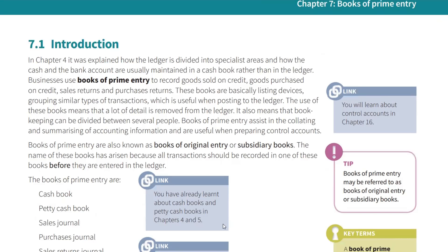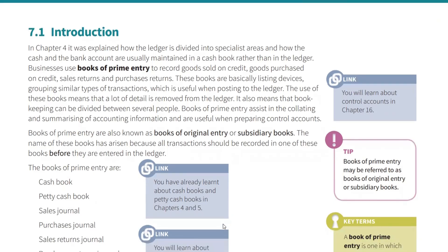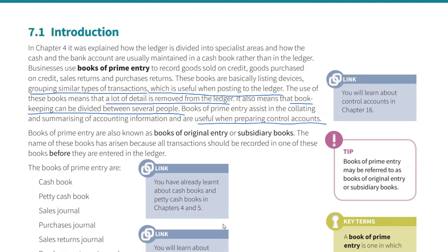Businesses use Books of Prime Entry to record goods sold on credit, goods purchased on credit, and sales returns. These books are basically listing devices — grouping similar items together. One benefit, which will be tested in the exam, is that it groups similar items together: all credit sales are recorded together as a list, which is useful when posting to the ledger. Secondly, it removes a lot of detail from the ledger — in the ledger account you just post the totals. It also means bookkeeping can be divided between several people, which helps avoid fraud. It also assists in collating and summarizing account information, useful when preparing control accounts.